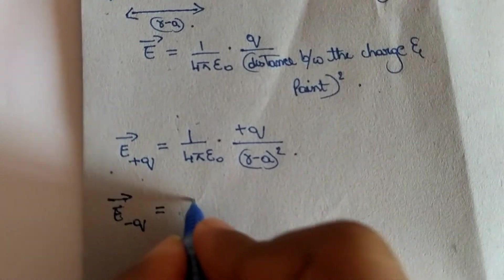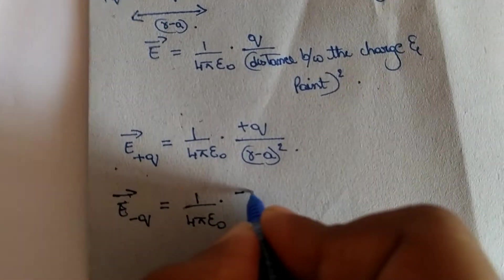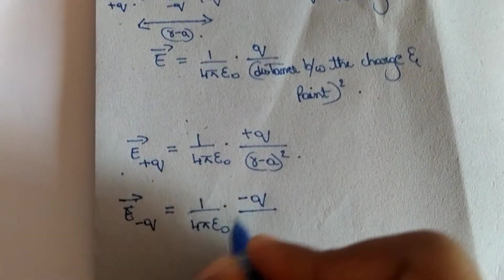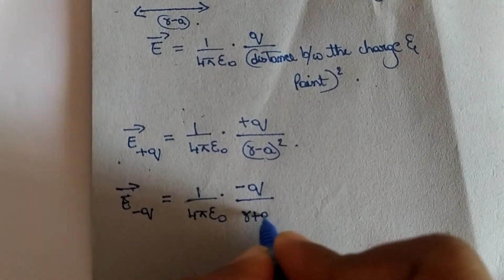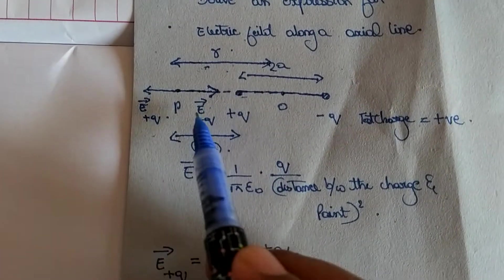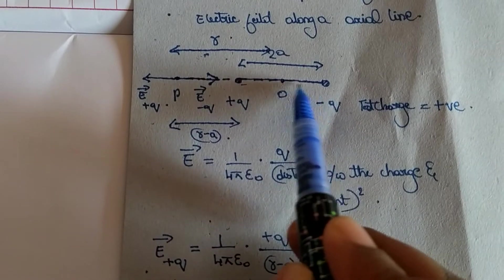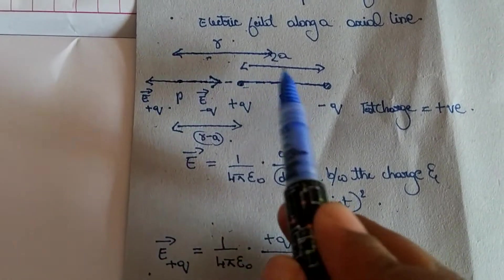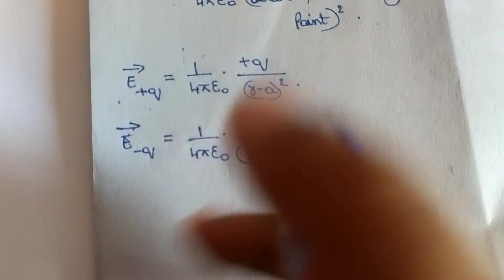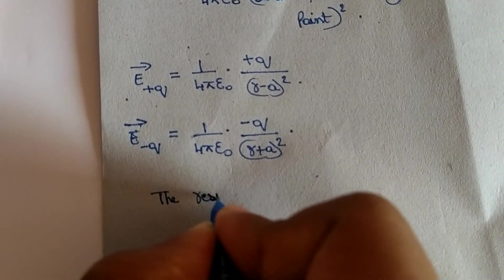Next, E minus Q, electric field due to minus Q. This is 1 by 4 pi epsilon not into Q. The charge is negative here, so r plus a, r plus a whole square. This is the distance r plus a whole square.